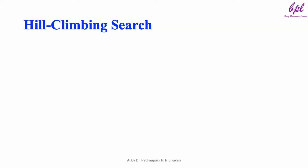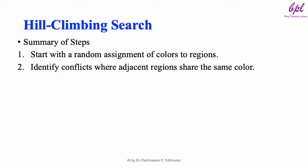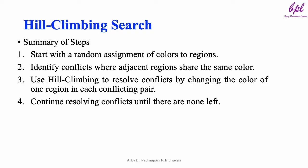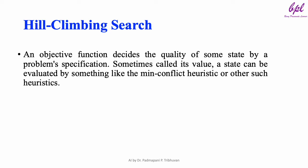In hill climbing, we used 5 different steps. We started with a random assignment of colors to regions, then identified conflicts where adjacent regions share the same color. We used hill climbing to resolve conflicts by changing the color of one region in each conflicting pair, and continued resolving conflicts until none remained. We then reached a final state with a valid color assignment. This process illustrates how hill climbing iteratively improves the solution, minimizing the number of conflicts step by step until a valid solution is reached. An objective function decides the quality of a state by problem specification.